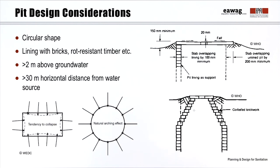The pit volume should be designed based on the number of users, the design life or desired filling time, and the local sludge accumulation rate. The sludge accumulation rate depends on several factors, including the infiltration capacity of the soil, the biodegradability of dry cleansing materials, and the water use. It is typically in the order of magnitude of 40 to 90 liters per capita per year.